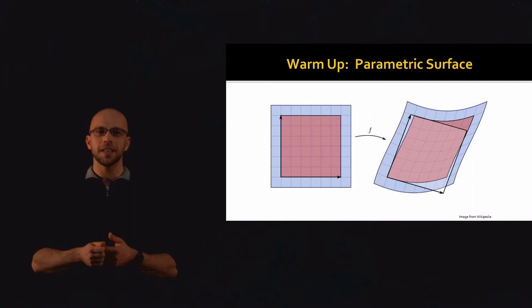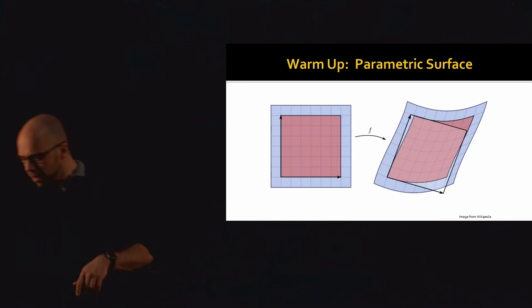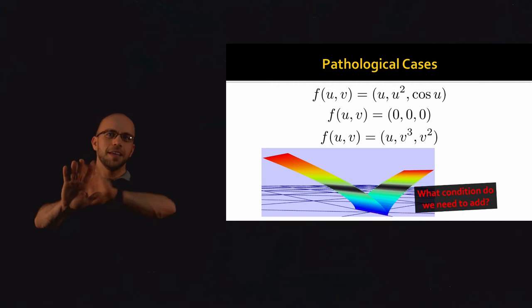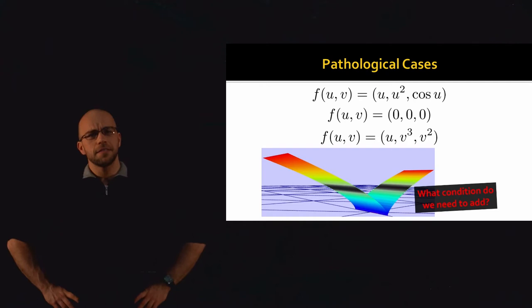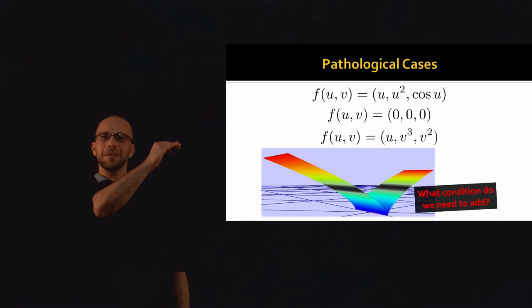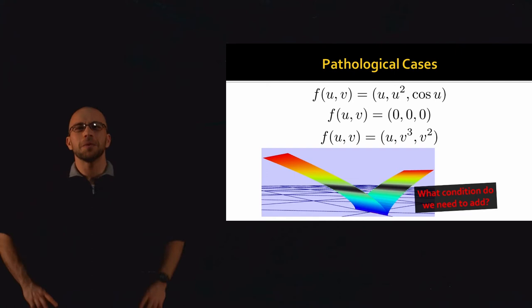Let me give you three different pathological cases that we might worry about. These are all functions f of (u, v) — they all map from the two-dimensional Euclidean plane into three-dimensional space. But I would argue that these three things don't lead us to a good differentiable surface, and for three very different reasons. Probably the second example, f(u, v) = (0, 0, 0), is the simplest: we haven't defined a surface, we've defined a point — it takes u, v as input, ignores that input, and gives us back the origin in 3D.